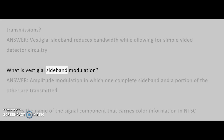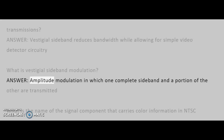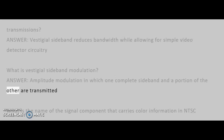What is vestigial sideband modulation? Answer: Amplitude modulation in which one complete sideband and a portion of the other are transmitted.